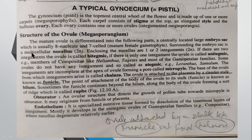The nucellus is a multicellular tissue which is covered by the integuments. This is the initial stage of the ovule. I am saying initial stage because when the ovule gets mature, we then call it the female gametophyte or embryo sac.